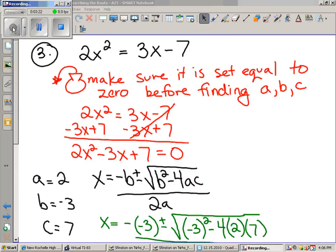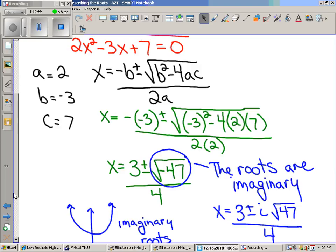Finally, the third problem that we took a look at today was 2x squared equals 3x minus 7. This one's a little tricky because in order to use the quadratic formula, you have to make sure it is set equal to zero before you go and find A, B, and C. So take all of this business over here, subtract it over or add it, whatever you've got to do to make one side zero, and then go and find A, B, and C.